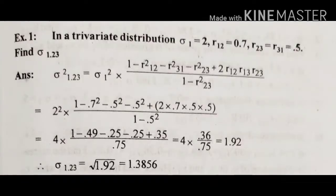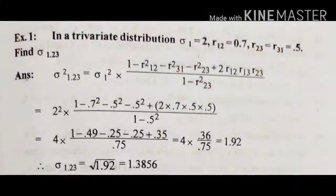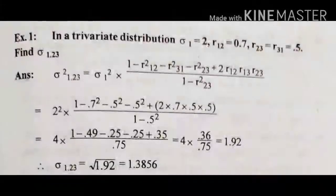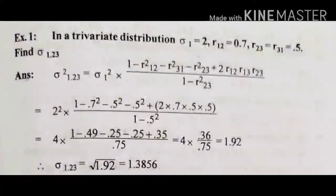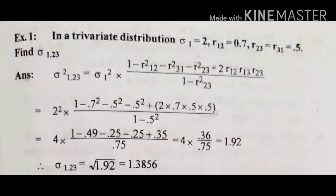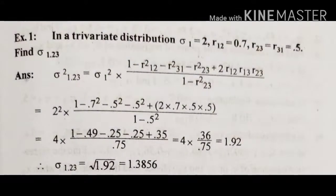Question: In a trivariate distribution, σ₁ equal to 2, r₁₂ equal to 0.7, r₂₃ equal to 0.5, r₃₁ equal to 0.5. Find σ₁.₂₃.